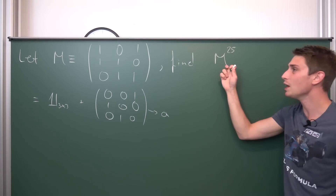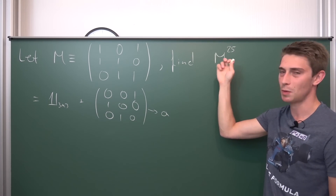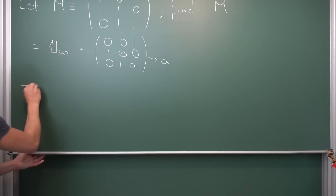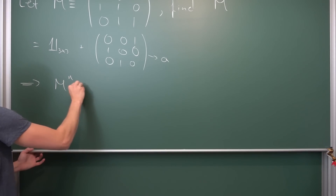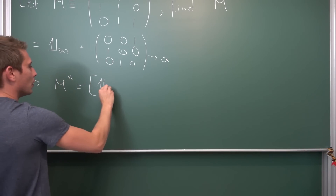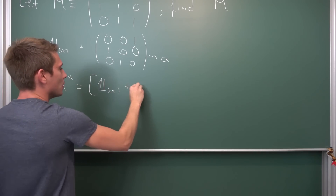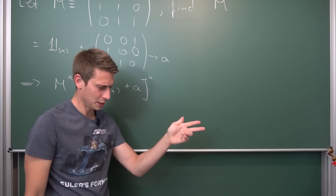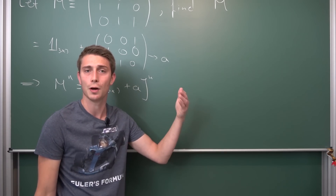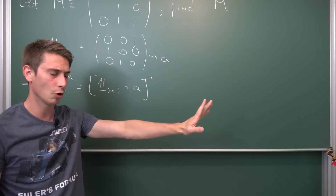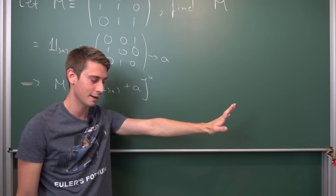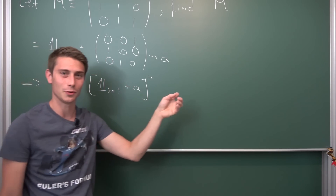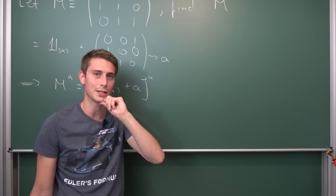Now we are going to raise our M to the nth power and see what we get out on the other side. M to the nth power is nothing but our identity matrix plus A, to the nth power. If you have the addition of two things to some power, we are going to make use of the binomial theorem. But hold on - functional analysis flashbacks. For this to hold, we need our operators to commute under multiplication. The identity matrix does commute, so we can safely make use of the binomial theorem here.